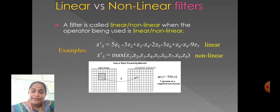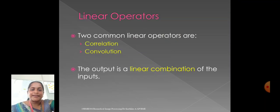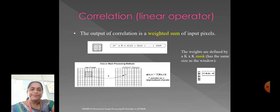And the second example, for Z5, it is equal to maximum of Z1, 2, 3, 4, 5, 6, 7, 8 and 9. It is a non-linear process. And two common linear operators are correlation and convolution. The output is a linear combination of the inputs.